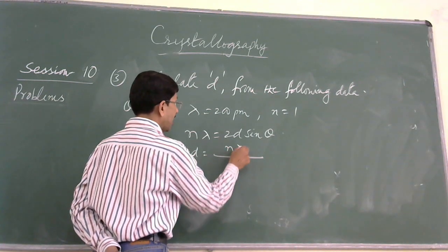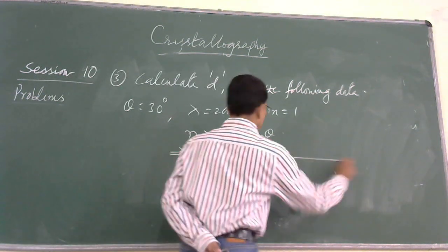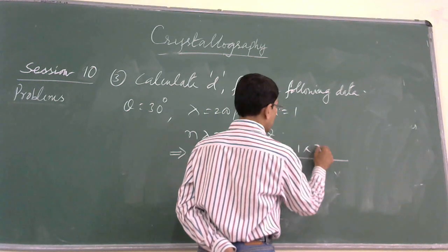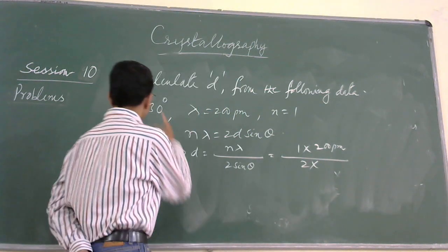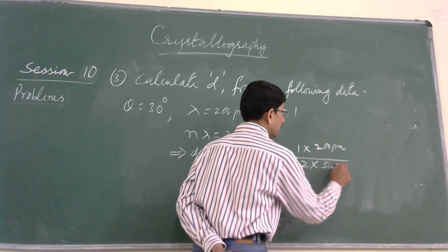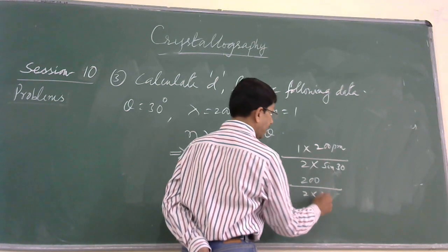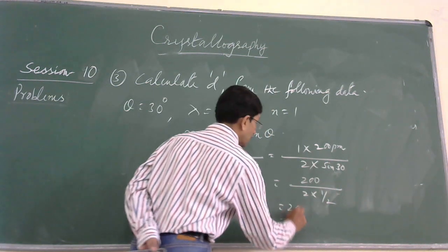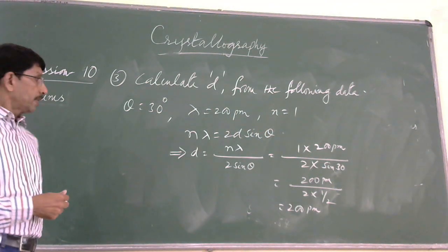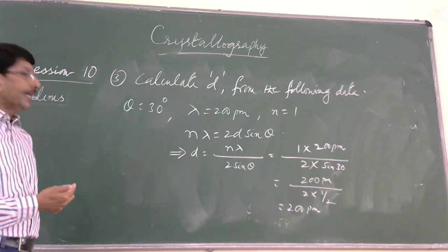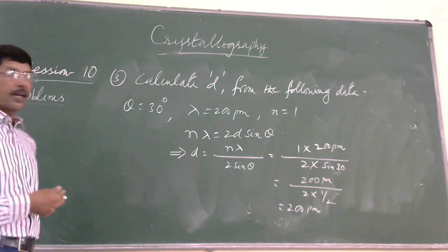Since we have to calculate D, the expression for D would be N lambda over 2 sine theta. N is 1, lambda is 200 angstroms, theta is 30 degrees. So 200 divided by 2 times sine theta, where sine 30 is half, gives us that wavelength of X-rays is also equal to interplanar distance. This is how you can change the data to calculate other parameters.